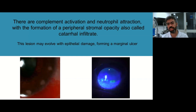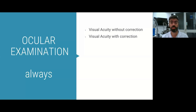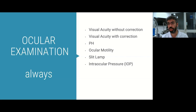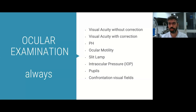Regarding ocular examination, we always need to assess visual acuity without correction, pinhole, ocular motility, slit lamp evaluation, intraocular pressure, the pupils, and confrontation visual fields. This information is important because it's part of our diagnostic workup. The patient is going to come with blurry vision, pain, and photophobia, so sometimes it's difficult to evaluate, but it's still very important. You may need to use anesthetic before the evaluation.